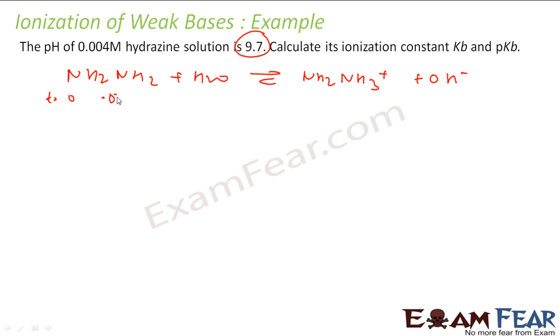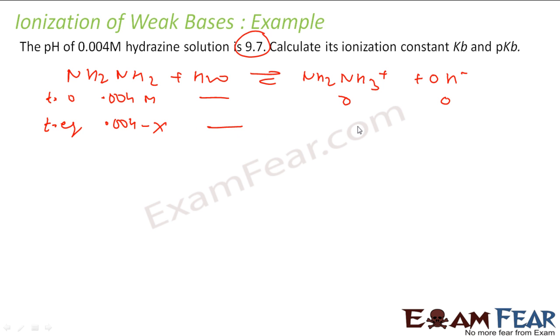At t = 0, NH₃ concentration is 0.004 M, NH₄⁺ is 0, and OH⁻ is 0. At equilibrium, NH₃ becomes 0.004 − x, NH₄⁺ becomes x, and OH⁻ becomes x.